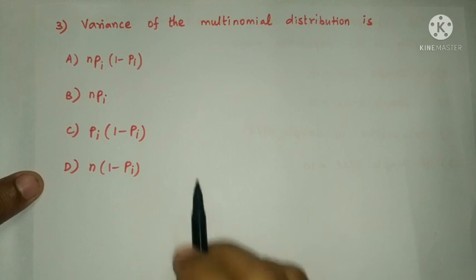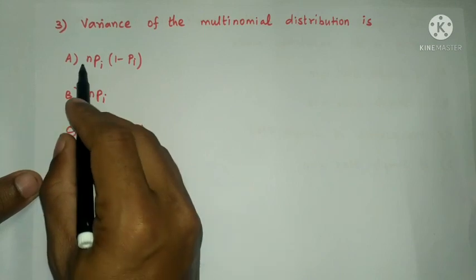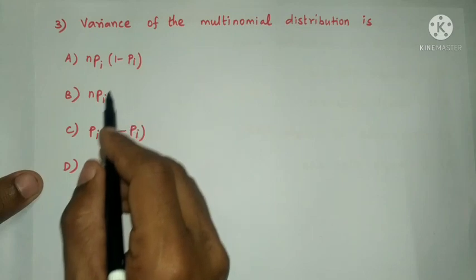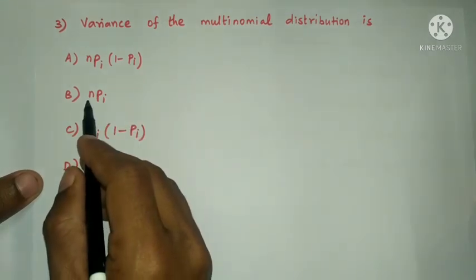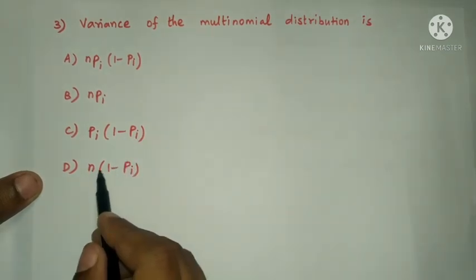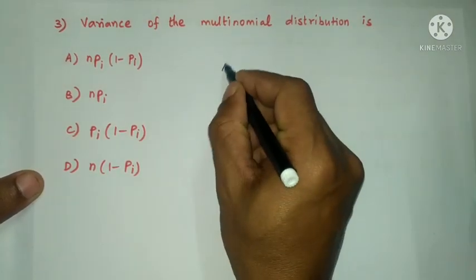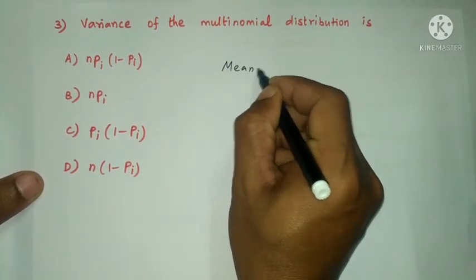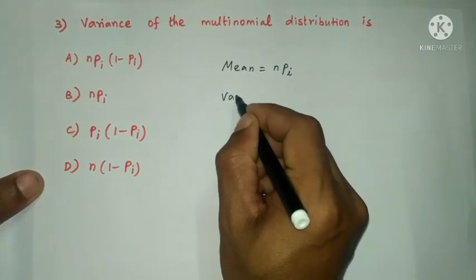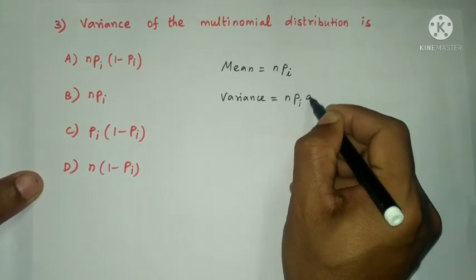Next question: the variance of the multinomial distribution is — Option A: nπ(1−π). Option B: nπ. Option C: π(1−π). Option D: n(1−π). For the multinomial distribution, the mean is nπ, and the variance is n × π × q, where q = 1 − π.